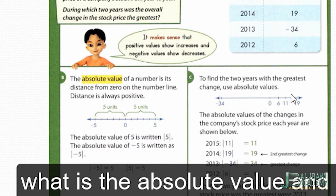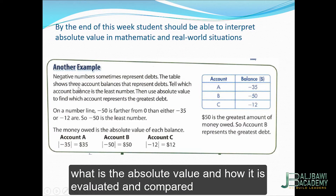Now let's apply absolute value to a real-world example. Negative numbers sometimes represent debts. The table shows three account balances that represent debts. Which account balance is the least number? Then use absolute value to find which account represents the greatest debt. We have three accounts: A, B, and C, with balances of negative 35, negative 50, and negative 12.